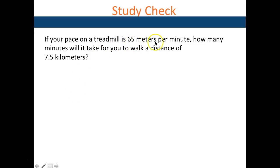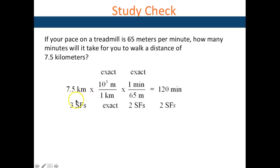If your pace on a treadmill is 65 meters per minute, how many minutes will it take to walk 7.5 kilometers? Start with the measured value — 7.5 kilometers — convert to meters, then use the rate of one minute per 65 meters to convert meters into minutes. Kilometers cancel, then meters cancel, leaving minutes. These conversions are exact within the metric system, so the answer has two significant figures.